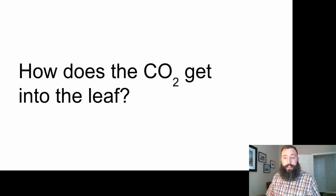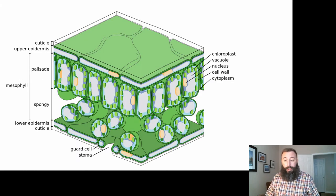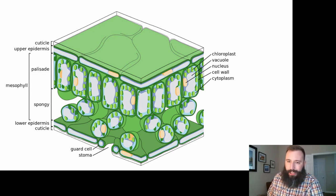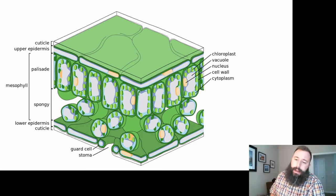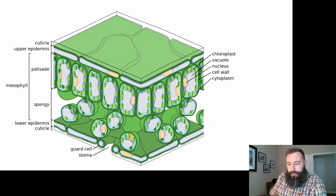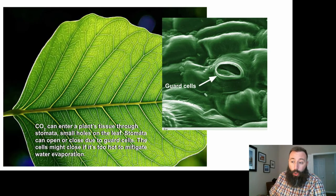So let's start off with this: how does carbon dioxide enter into the leaf tissue? Take a look. We've got a nice cross-section of a leaf. If you're looking at the diagram here, all of those little circles inside those plant cells represent chloroplasts. The yellow circles represent the nuclei. But look at the very bottom here — if you see the cross-section of those two guard cells,